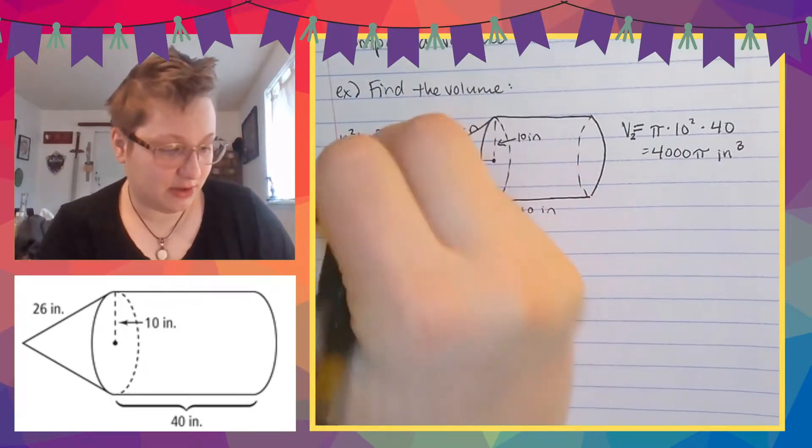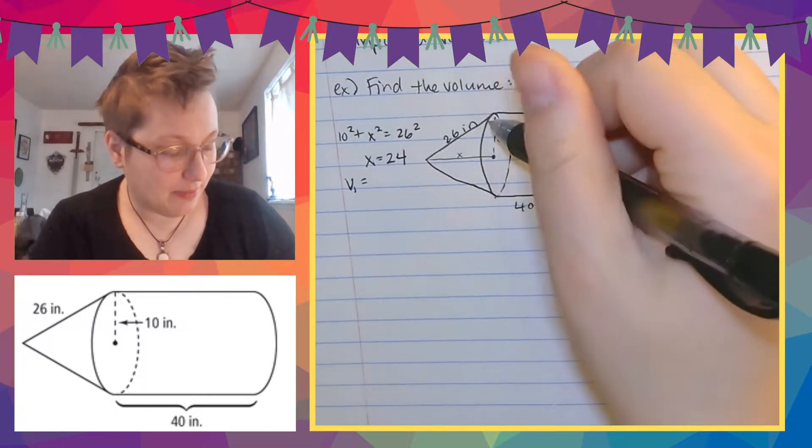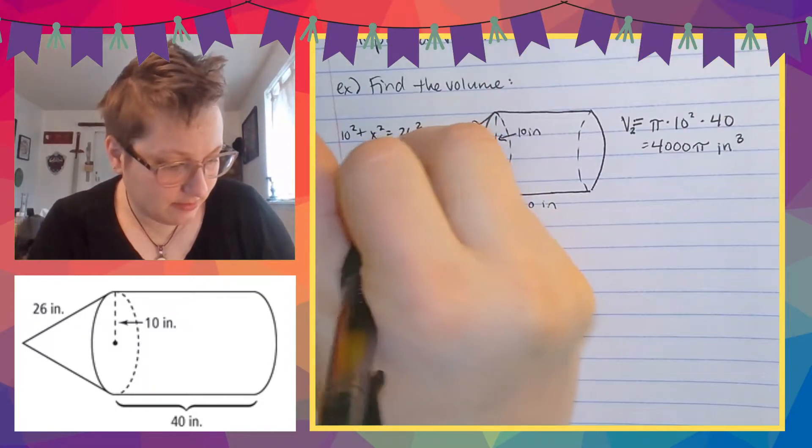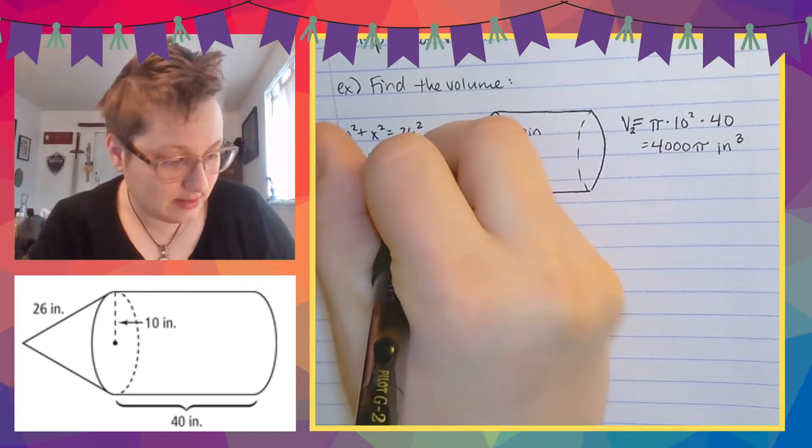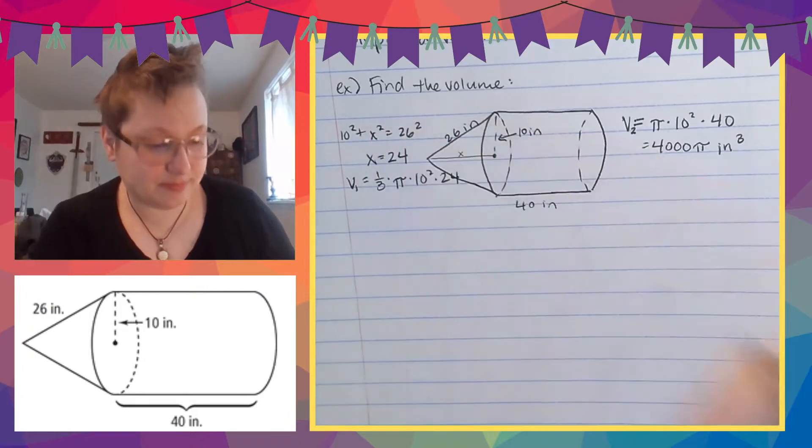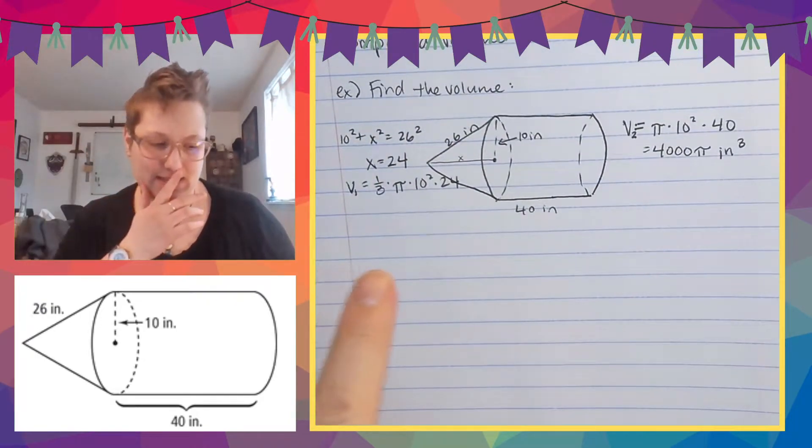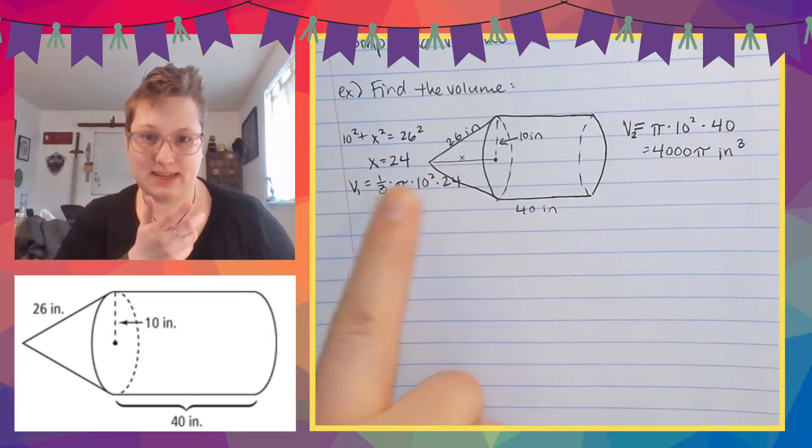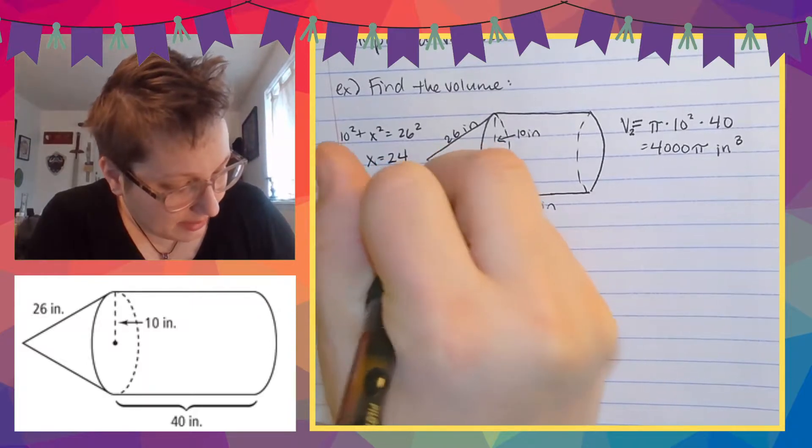So now I can find the volume of part one, which is going to be one third times the area of the base, which is still pi r squared, pi times 10 squared times the height, which is 24. And I get, hold on, 800 pi. 24 divided by three is eight and then 100 times eight would be 800. So yeah. So volume one equals 800 pi.